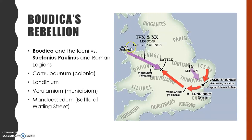At this point, this was the largest force of Romans on the island, led by Paulinus, who was coming back from putting down another insurrection on the western coast of the island. The battle happened at a place called Manduessedum, but it has now become known as the Battle of Watling Street — named, unsurprisingly, after the street that runs through the location of the ancient battle.